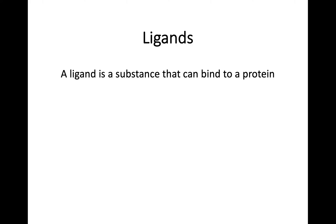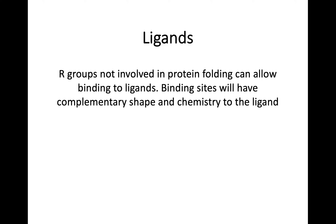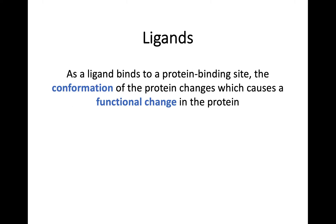Next we look at ligands. A ligand is a substance that binds to a protein. R groups not involved in protein folding can allow binding to ligands, and these binding sites will have a complementary shape and chemistry to the ligand — like a jigsaw piece fitting together. As a ligand binds to a protein binding site, the conformation of the protein changes, and that change in shape leads to a change in the functional activity of the protein.